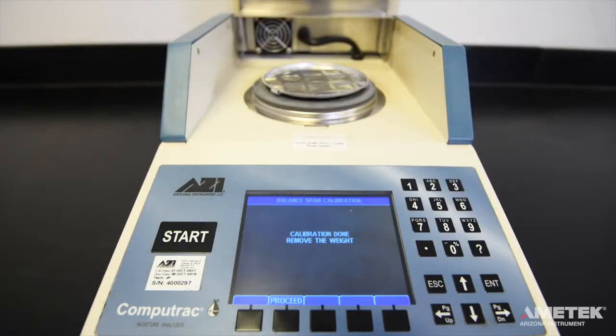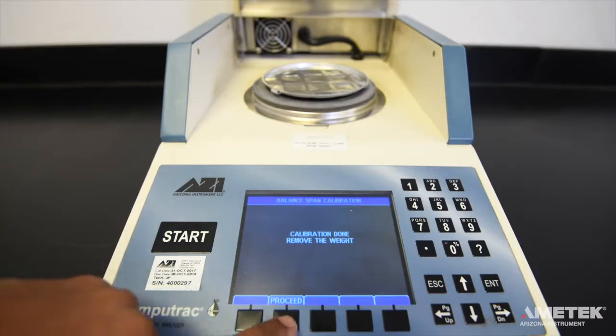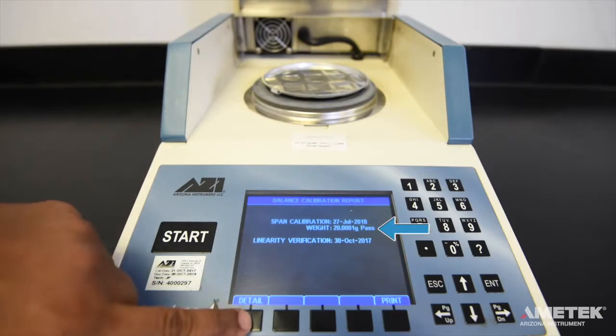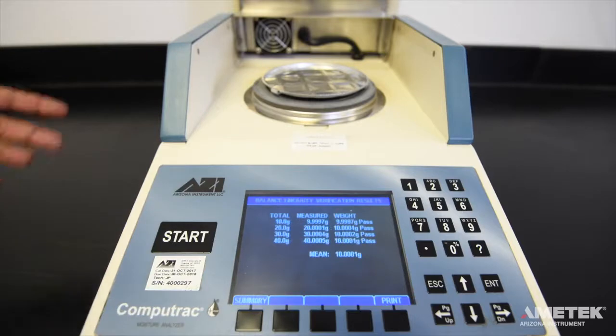At the end of the calibration process, you will see a screen with the button labeled Proceed. Press the button and you will be taken to the results screen where you will find out if the span calibration has passed or failed. After a successful calibration, the calibration report will be displayed.